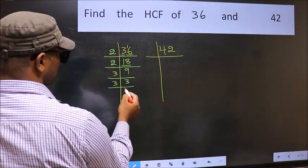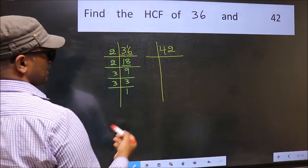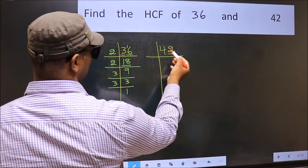3 is a prime number, so 3, 1's 3. Now the other number. Last digit 2, even, so take 2.